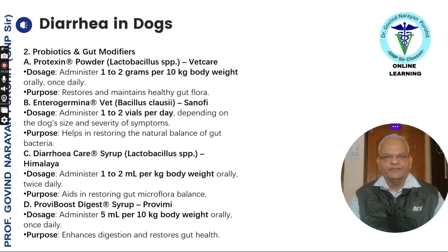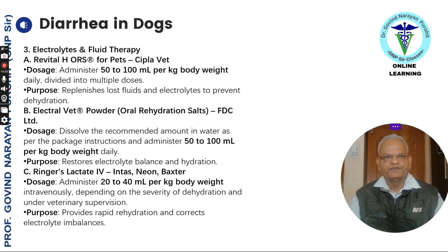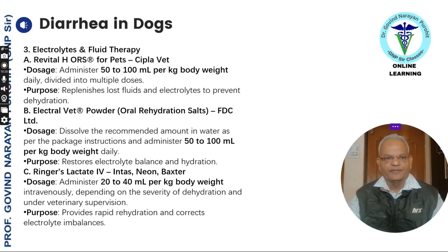Probiotics like Protexin can be given 1 to 2 grams per 10 kg body weight. Other options include diarrhea care lactobacillus from Himalaya 1 to 2 ml per kg body weight, and Pro-V boost 5 ml per kg body weight orally once daily. It is important to care for electrolyte and fluid balance — one can administer electrolyte powder orally, or if the condition is severe, administer electrolytes intravenously at 20 to 40 ml per kg body weight.